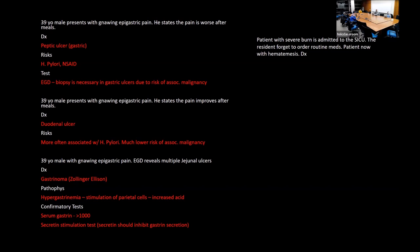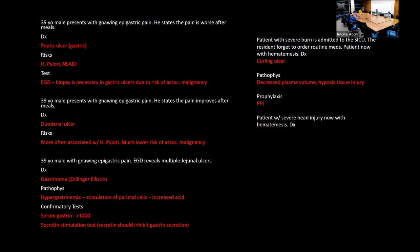A patient with severe burns admitted to SICU — the resident forgets to order routine medications and the patient develops hematemesis. That's a Curling ulcer (stress ulcer from burns). Prophylactic PPIs should be given to burn patients. Cushing ulcer is caused by head injury — increased vagal stimulation leads to more stomach acid via acetylcholine release activating parietal cells. A memory aid: Curling = burn (curling iron), Cushing = cushion your head.